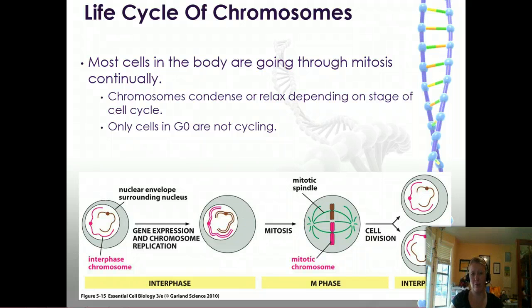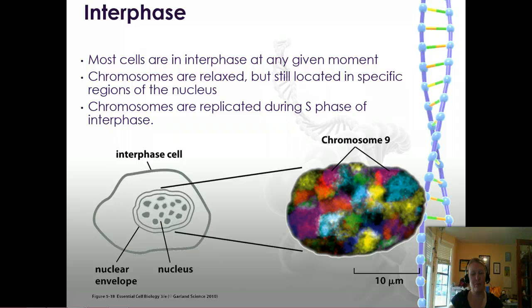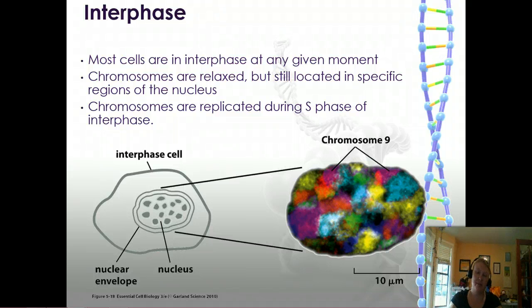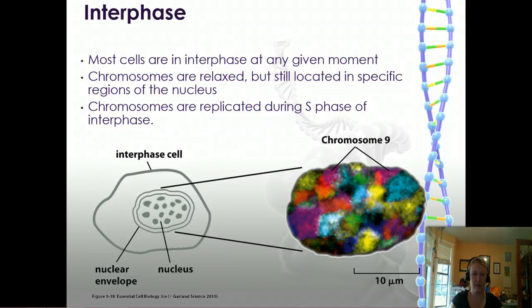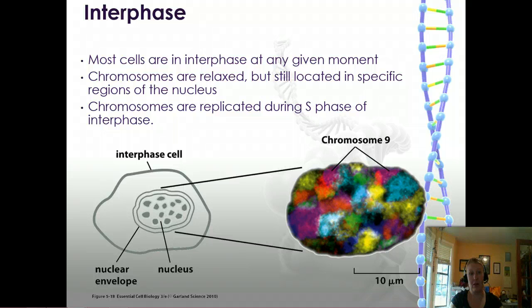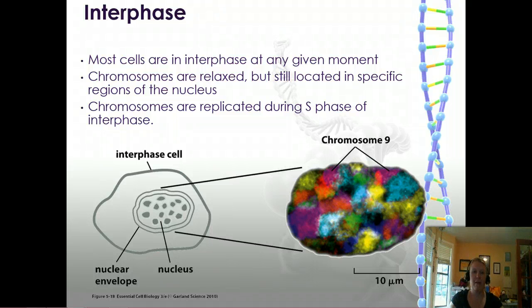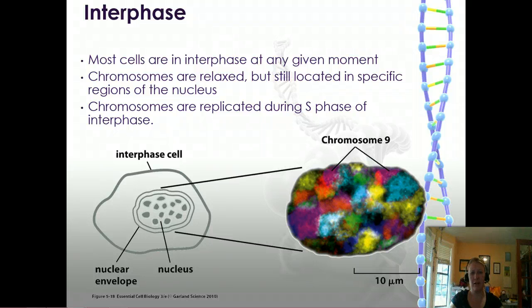Chromosomes are constantly being manipulated within the cell. Most cells are in interphase at any given moment — that's the longest phase. Within interphase, S phase is where chromosomes are being replicated. When not in S phase, chromosomes are somewhat relaxed but still kept in different areas. You can see through staining that there are specific regions where chromosomes can still be found, helping the cell locate them quickly. For example, if protein X's gene is on chromosome 9, the cell needs to know where chromosome 9 is located so it can read that gene.